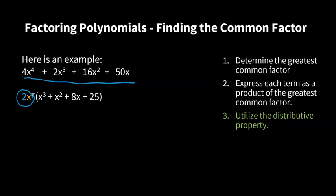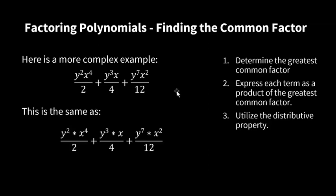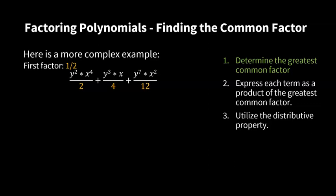Let's look at a more complex example. We have this rather intimidating polynomial, but we can use exactly the same method. Adding multiplication marks to clarify: we see y squared times x to the power of 4 divided by 2, plus y cubed times x divided by 4, plus y to the power of 7 times x squared divided by 12. What are the common factors? The first one is one-half, because each term is divided by an even number, meaning it can be a multiple of one-half.